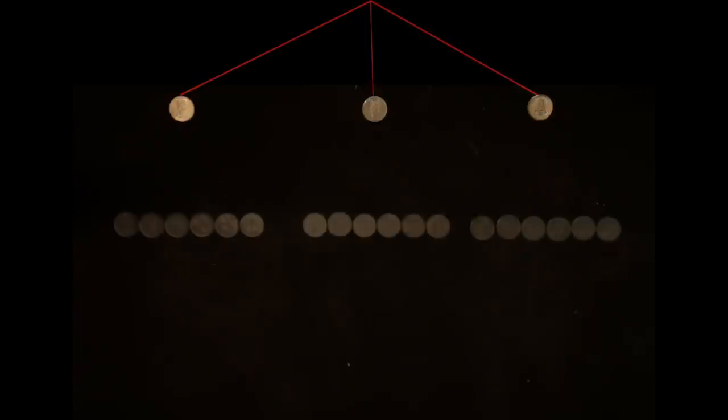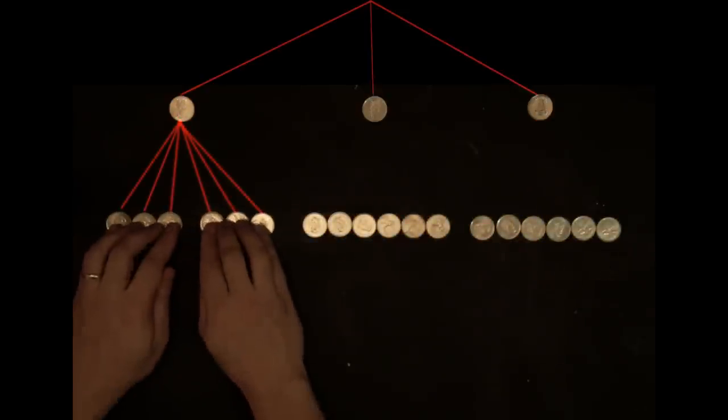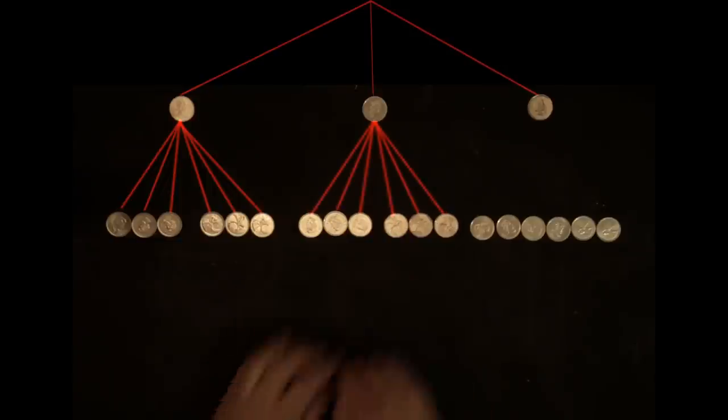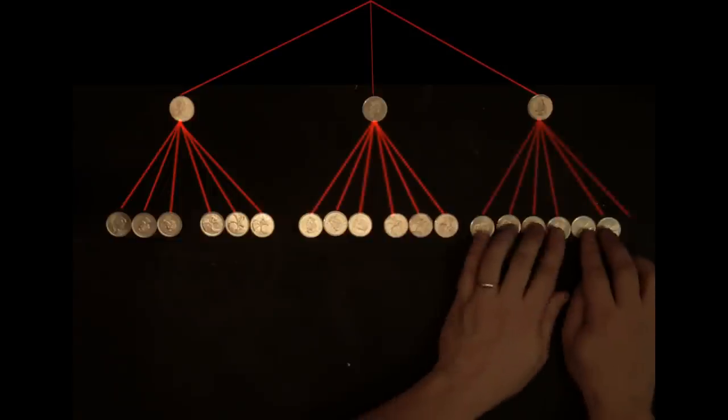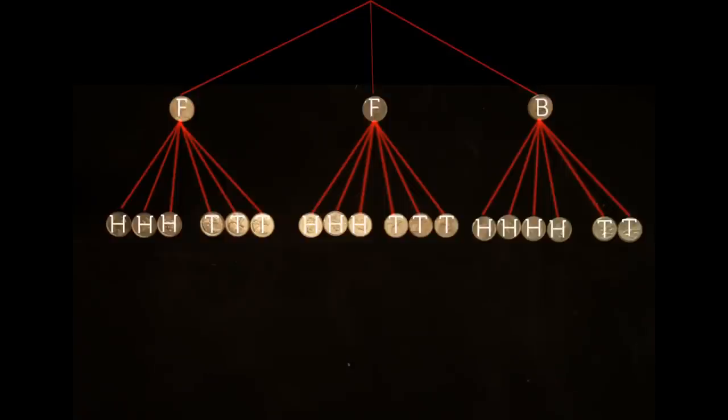And finally, we label our leaves. The fair coin now splits into six equally likely leaves, three heads and three tails. For the bias coin, we now have two tail leaves and four head leaves. And that is it.